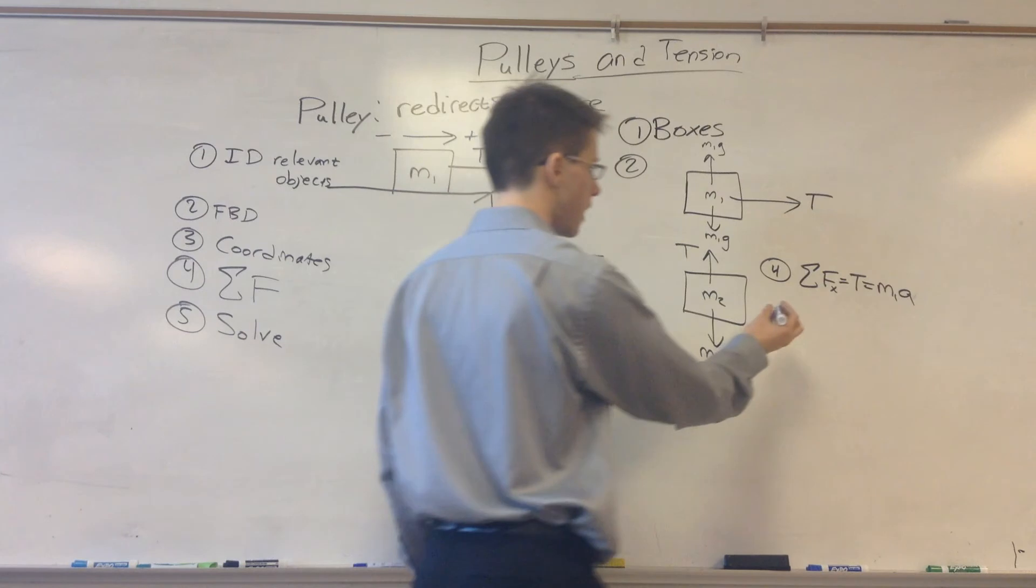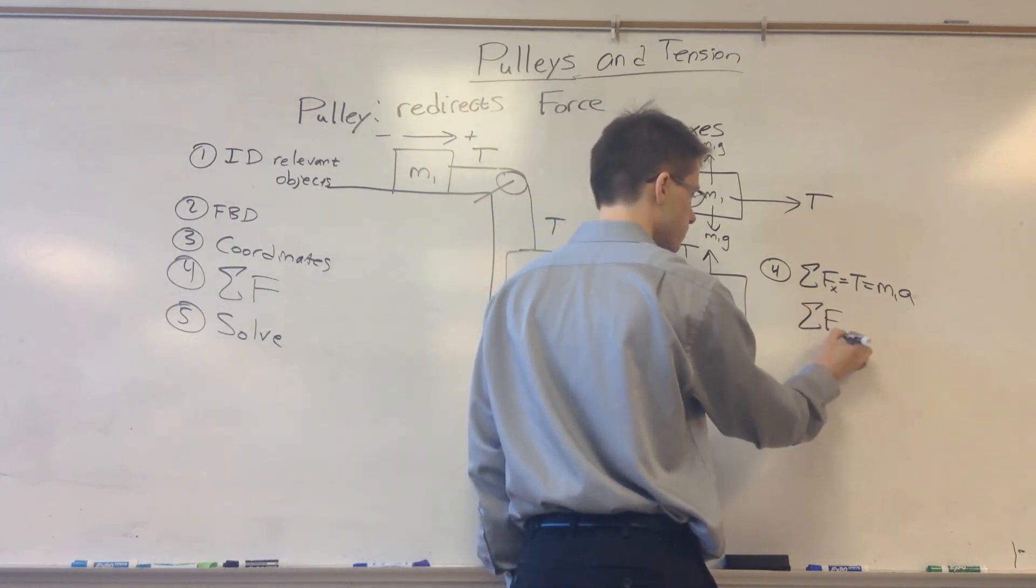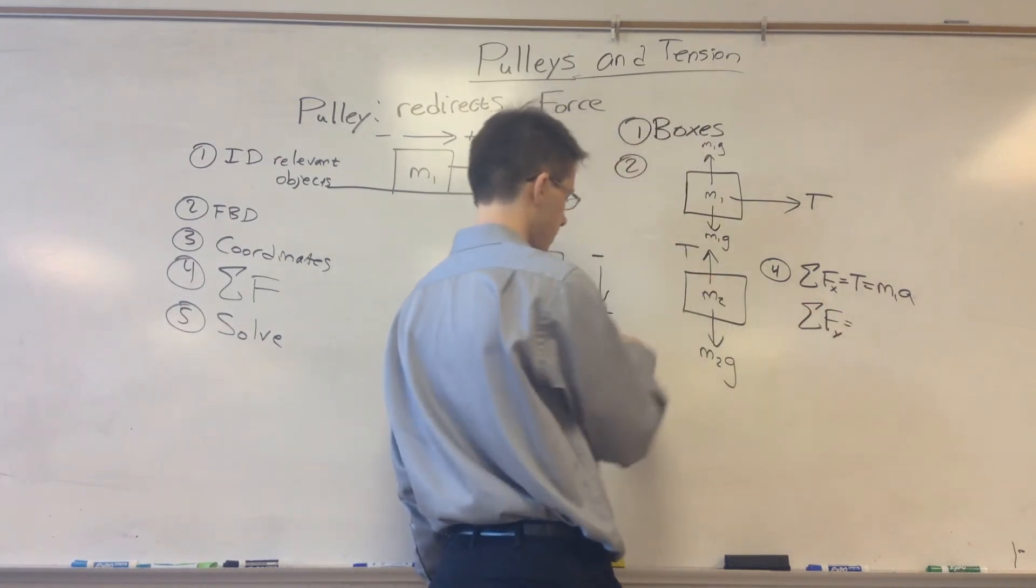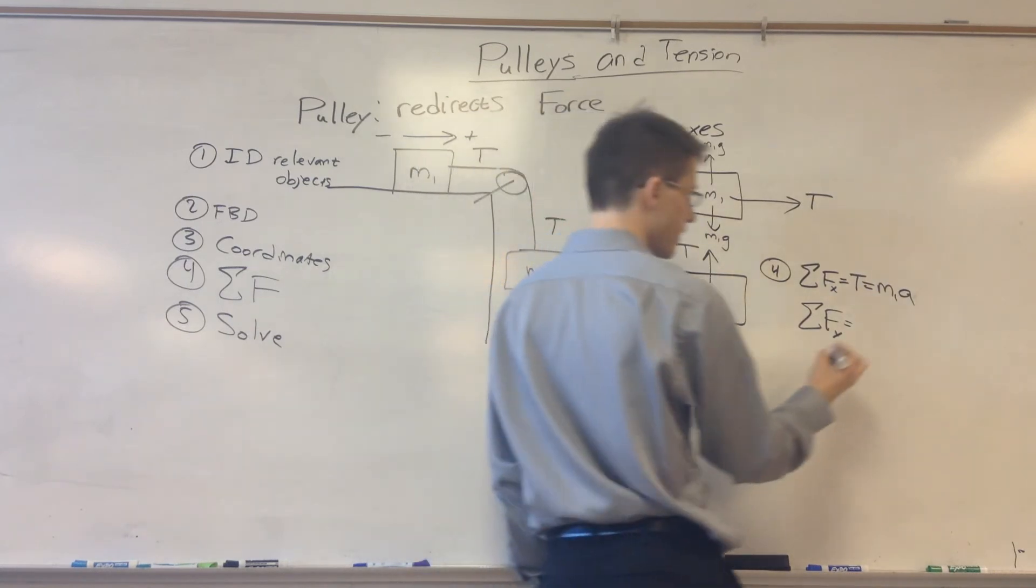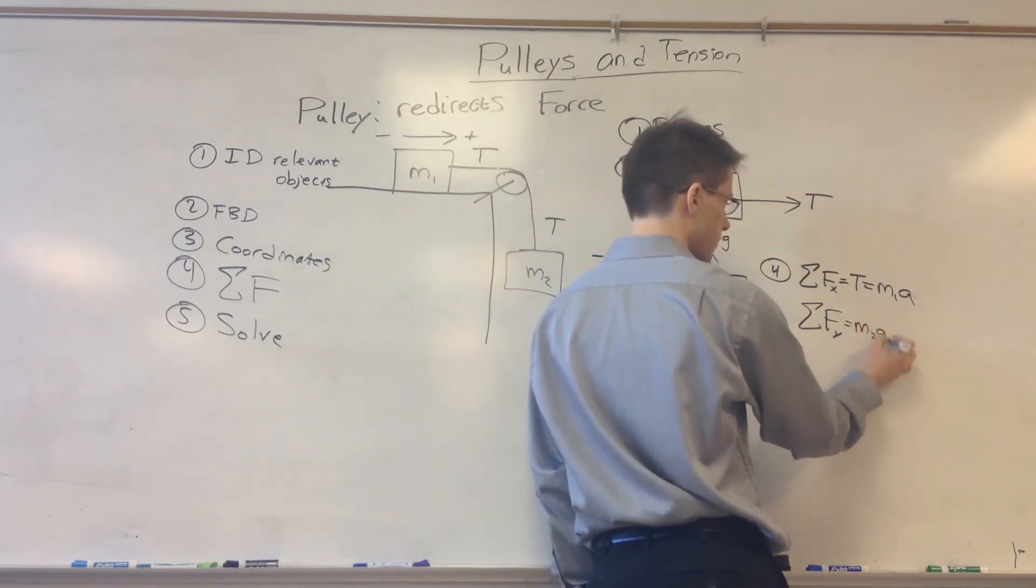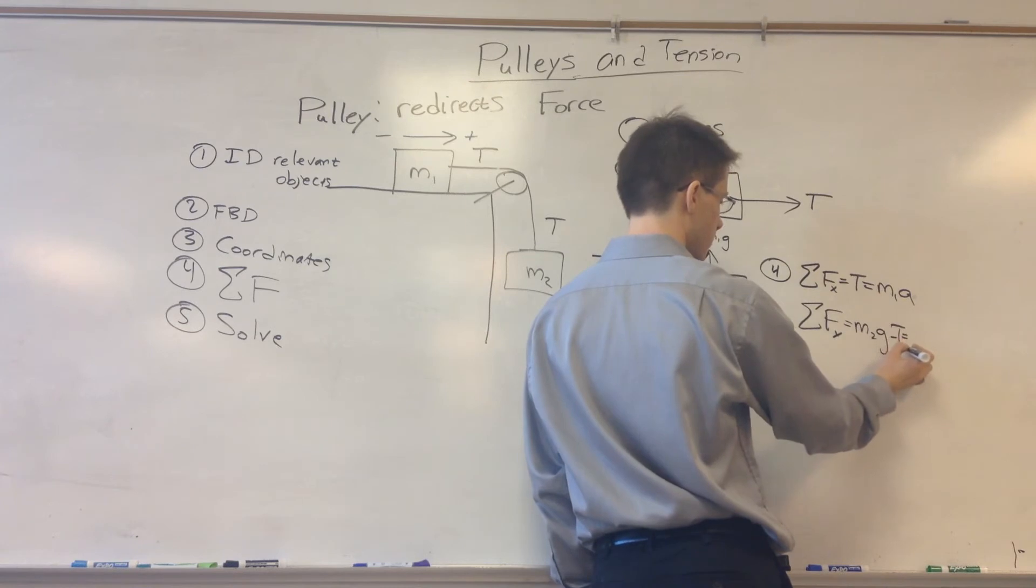For our second block, we're going to add up the forces in the y direction. In the y direction, we have our positive direction is down, so we have m2g minus T is equal to m2a.